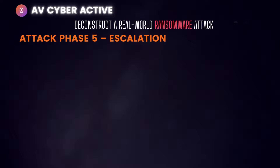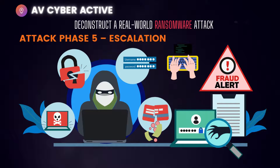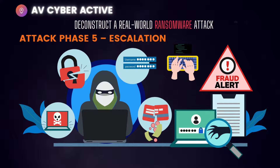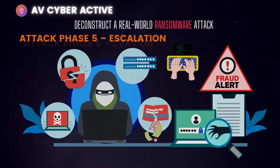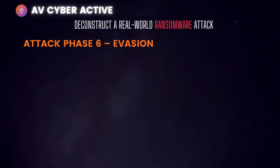Phase five is Privilege Escalation. The name of the game is always privilege escalation — attackers keep cracking open hash dumps and pulling out credentials in an attempt to navigate around the system. They perform various credential-oriented operations and ultimately use elevated access to navigate to where they want to deploy or upload their ransomware payload.